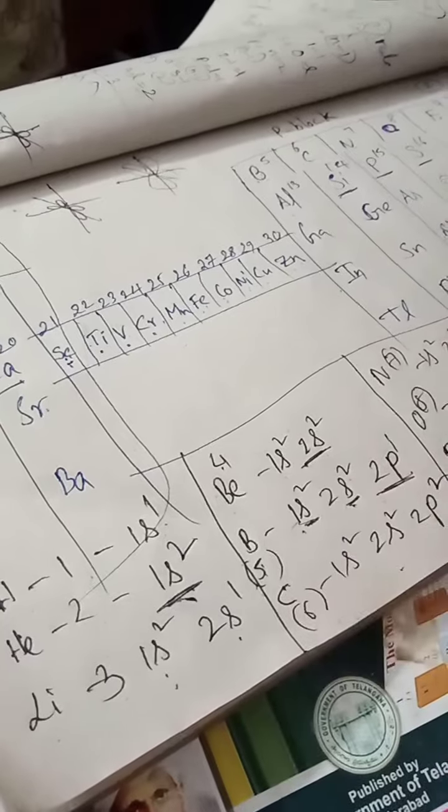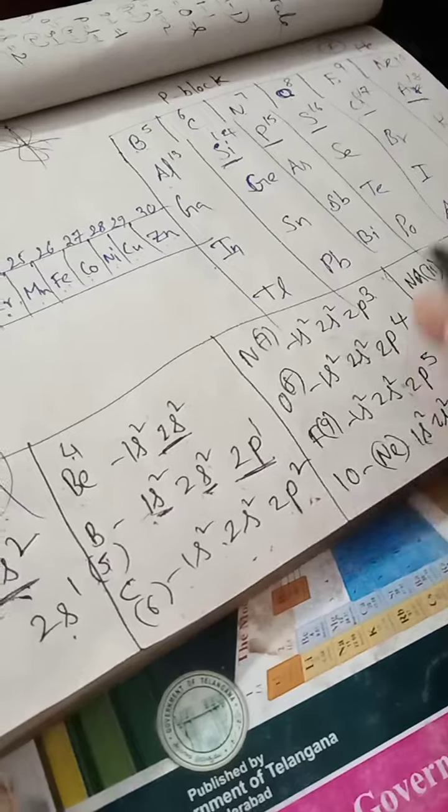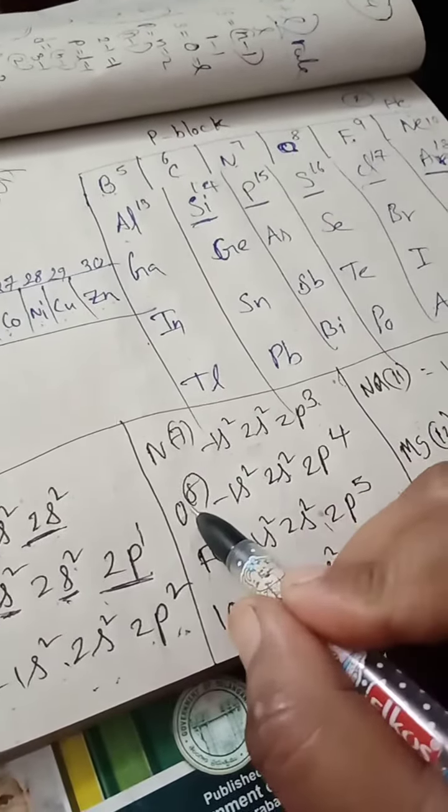Nitrogen, atomic number 7: 1s² 2s² 2p³. Oxygen: 1s² 2s² 2p⁴.